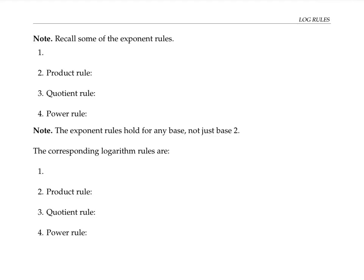To keep things simple, we'll write everything down with a base of two, even though the exponent rules hold for any base. We know that if we raise two to the zero power, we get one. We also have a product rule for exponents, which says that two to the m times two to the n is equal to two to the m plus n. In other words, if we multiply two numbers, then we add the exponents.